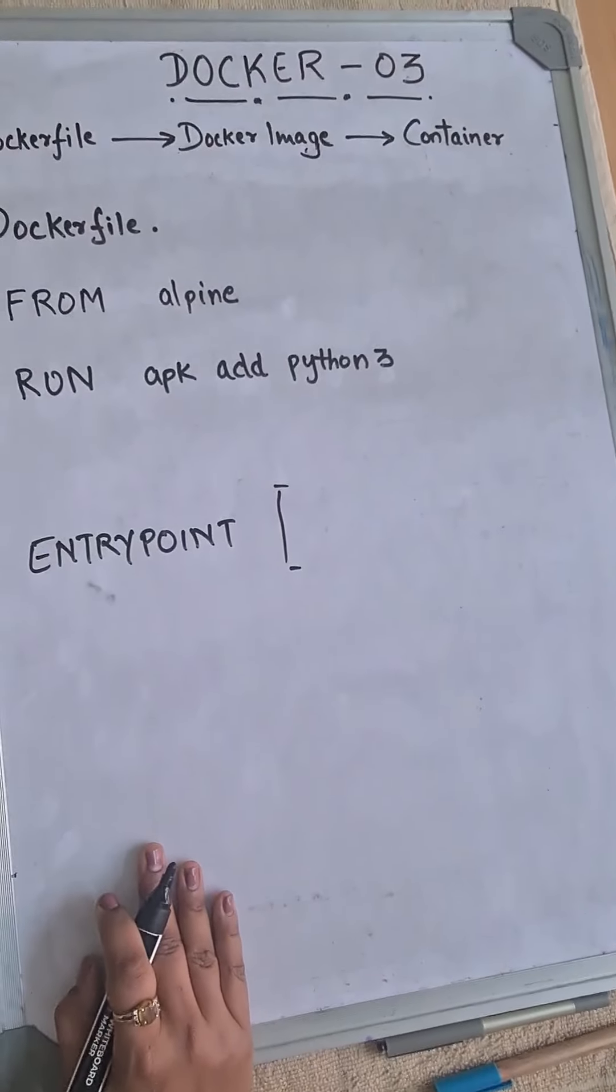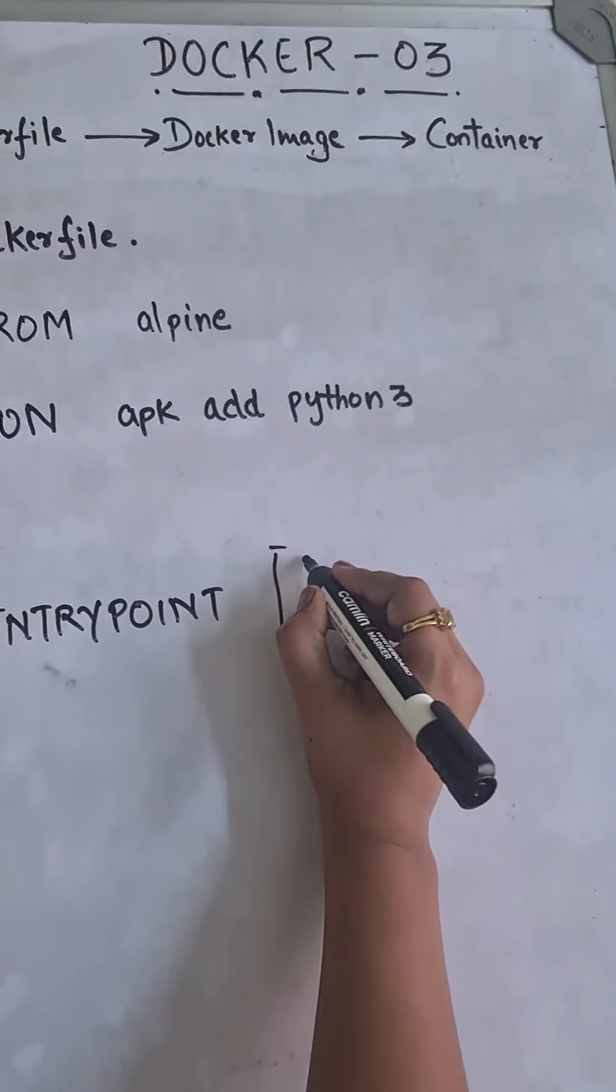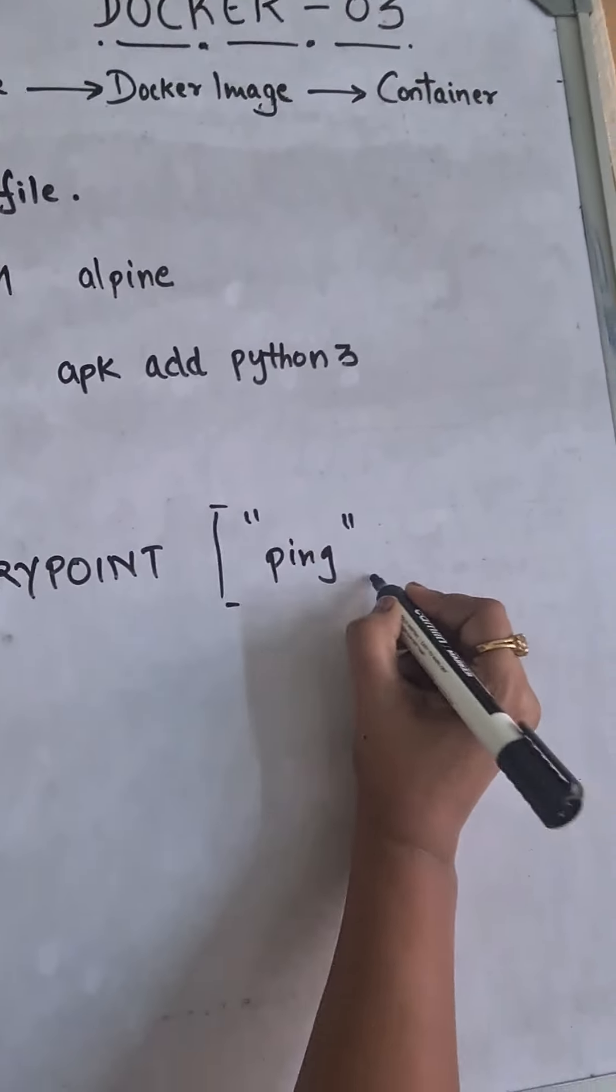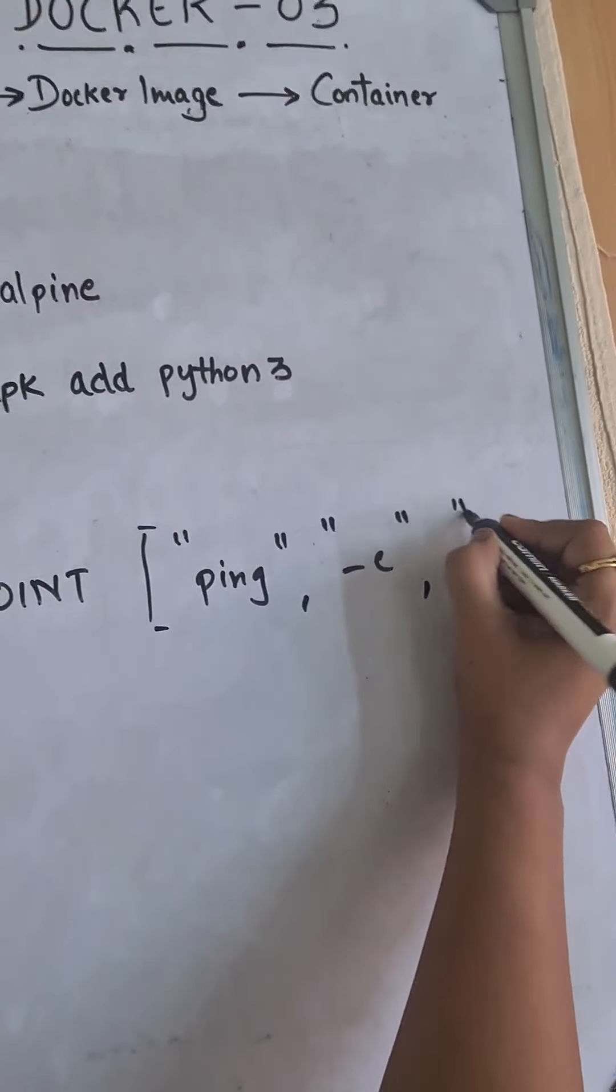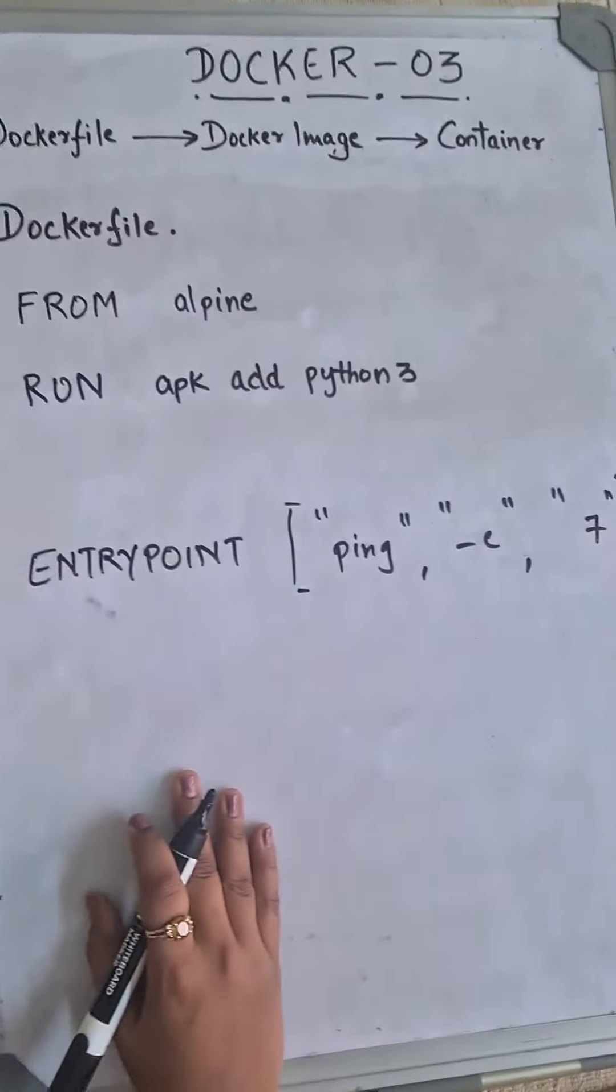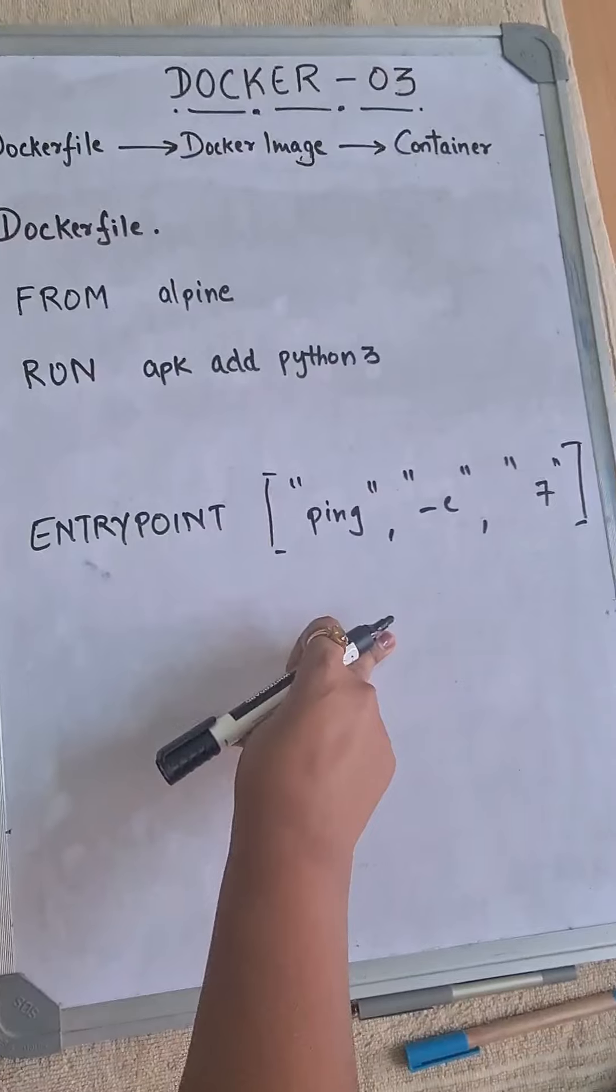So the main function is to ping, you can say, a website. So let's add the command for that. I'll put ping and I'll define -c, and let's say I want to ping it for seven times. So now this is our ENTRYPOINT, and what it needs to ping—the argument it requires, right?